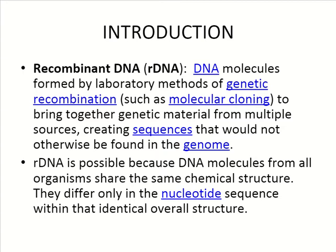Recombinant DNA is when DNA molecules are formed by laboratory methods of genetic recombination — the combination of different genes from different organisms, such as molecular cloning, to bring together genetic material from multiple sources, creating sequences that would not otherwise be found in a typical genome. Recombinant DNA is possible because DNA molecules from all organisms share the same chemical structure and only differ in the sequence of their nucleotide base pairs.